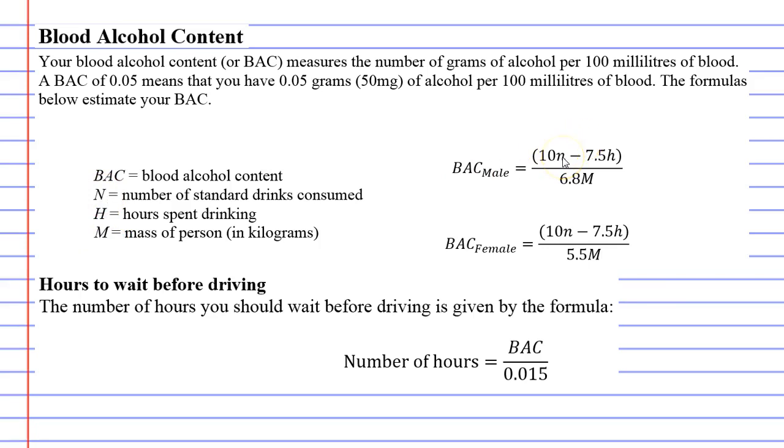N represents the number of drinks you have consumed. H is the number of hours spent drinking. And M is the mass or weight of the person in kilograms.